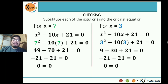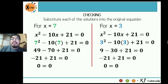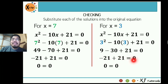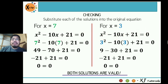For x = 3, substitute into the original equation: 3² - 10(3) + 21 = 0 → 9 - 30 + 21 = 0. Since the minuend is less, the difference is negative: -21 + 21 = 0. Therefore, x = 3 is also a solution. So both 7 and 3 satisfy the quadratic equation, and both solutions are valid.